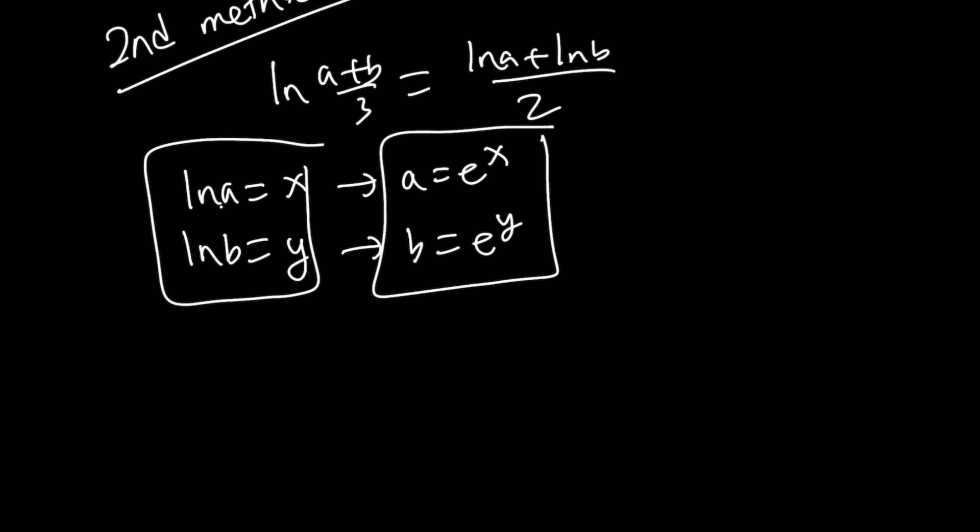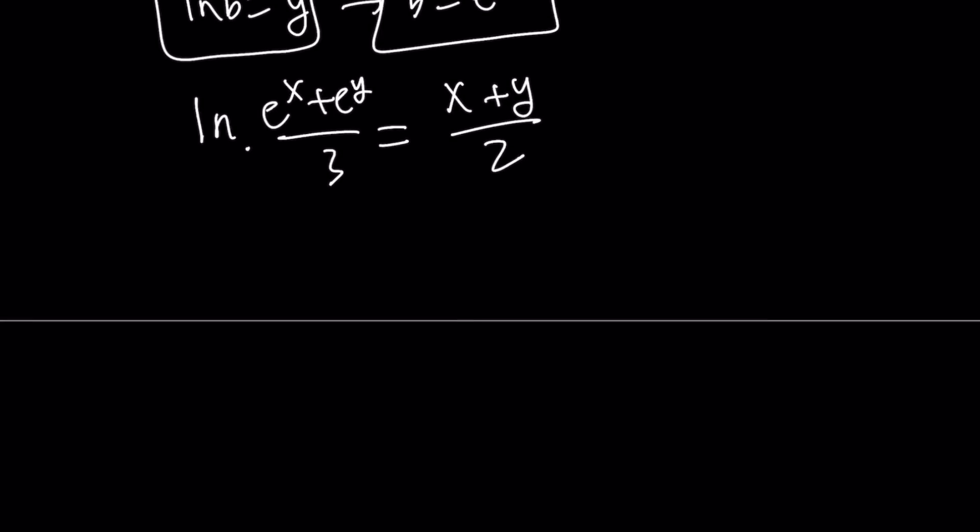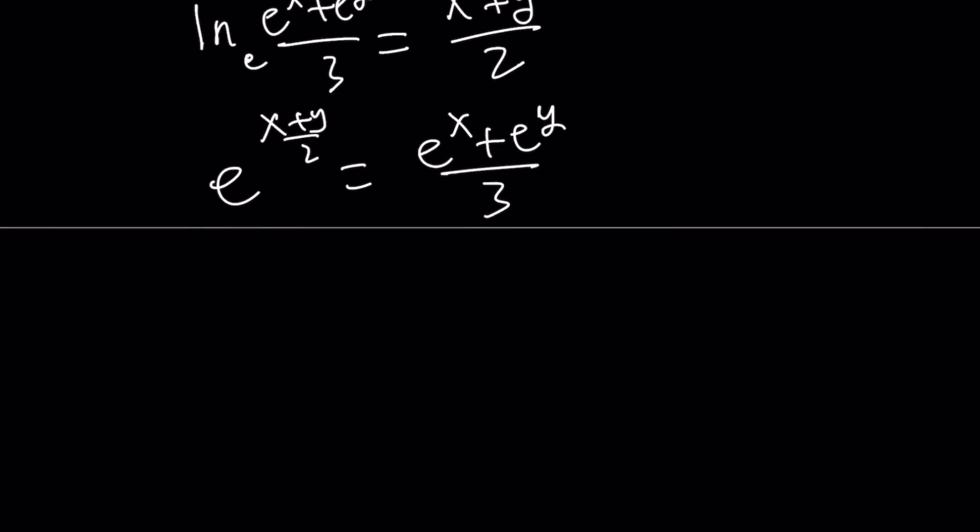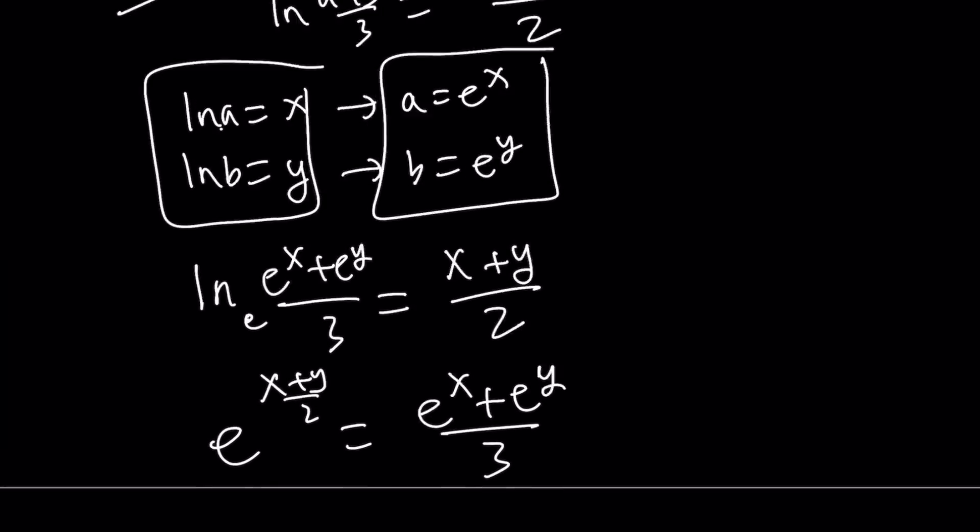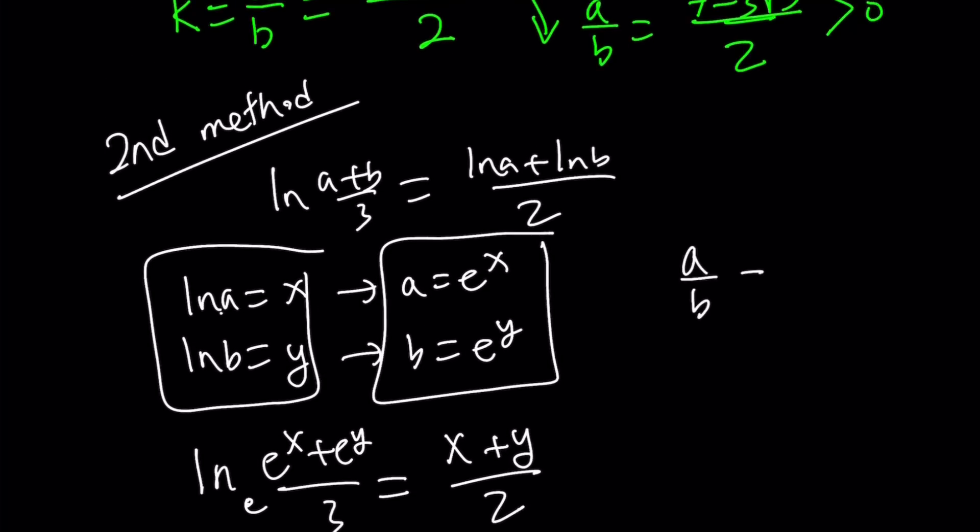On the left-hand side, I have the a and b. So I can write it as ln((e^x + e^y)/3). On the right-hand side, I have (ln a + ln b)/2. Okay, this doesn't look very simple. But again, by using the definition of logs one more time, this is an e, remember? So we get e^((x+y)/2) = (e^x + e^y)/3.